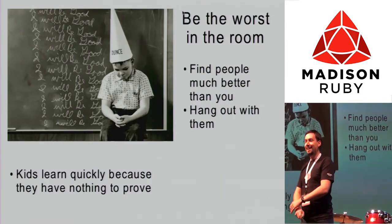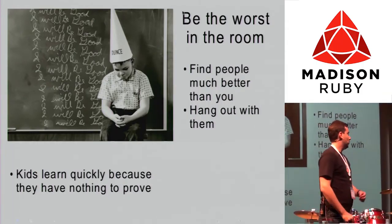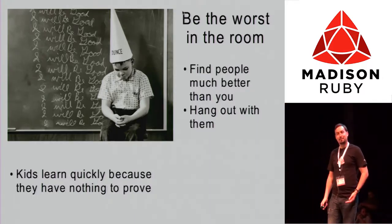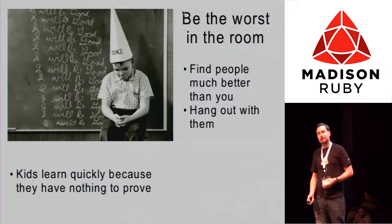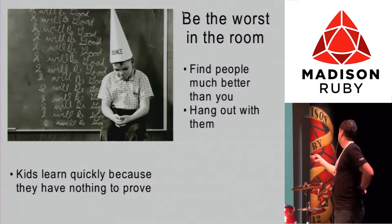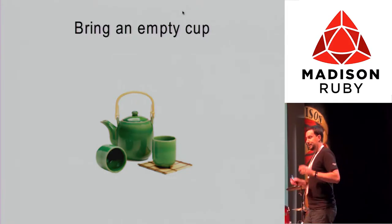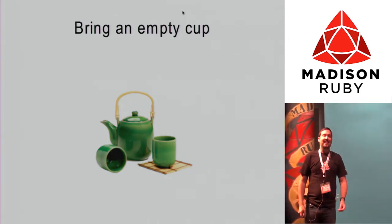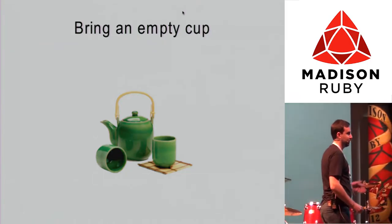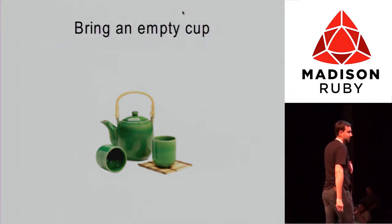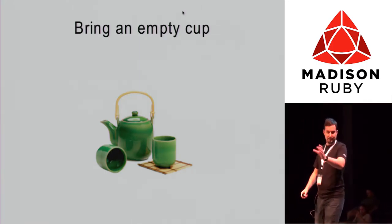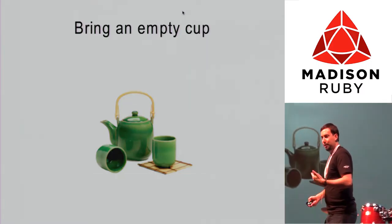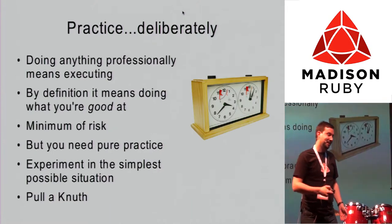Be the worst in the room. There are several difficult things about it — one is getting the best people to allow you in the room. But I think people like to help. When I show people my list of things, they seem genuinely eager to help me. Also, bring an empty cup. There's a Zen story: a novice monk goes to a new monastery, keeps showing off what he already knows, and when the master pours tea into his full cup it just overflows. If you don't have an empty cup, nothing new can get in.